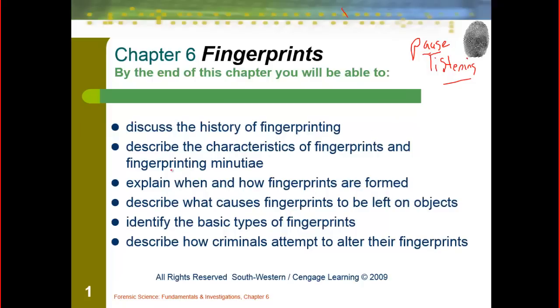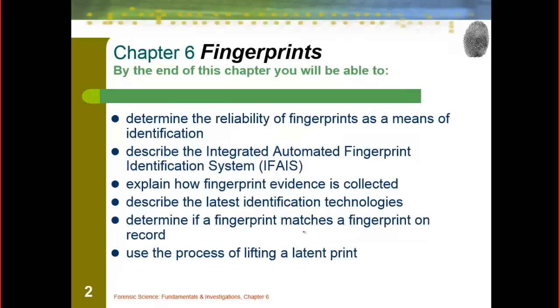Our video notes for this section — so that we can continue to work in our lab — we're going to be looking at the history of fingerprinting, the characteristics of fingerprints and those minutiae (the small details), how fingerprints are formed, what causes fingerprints to be left on objects, the basic types of fingerprints, and how criminals attempt to alter their fingerprints. We'll also cover the reliability of fingerprints, the automated system for identifying fingerprints, how evidence is collected, latest identification techniques, how to match fingerprints, and how to lift a latent print.